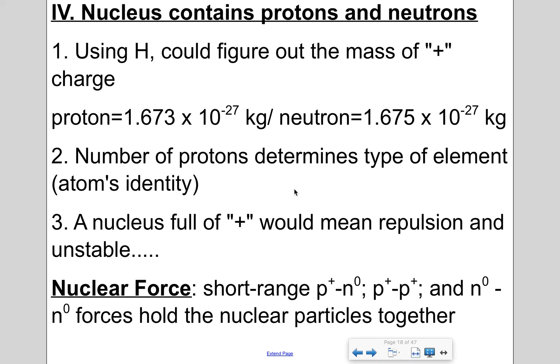Now remember, the number of protons an element has determines the type of element. It's tied into its atom's identity. So a nucleus that's full of positive charges would mean that the repulsion should be unstable because it's filled with protons. I mean, if I take a look at gold, right? Gold's atomic number is 79. So that means it has 79 protons in its nucleus. Well, geez, that's a lot of positive subatomic particles. That nucleus should literally pull apart or be unstable. However, there is a force that helps keep it together. And it's called the nuclear force. So it says the short range of the proton-neutron attraction, proton-proton forces, and the neutron-neutron forces hold the nucleus particles together. The neutrons give it just enough space between each proton so that they don't repel from each other.